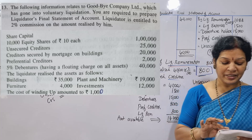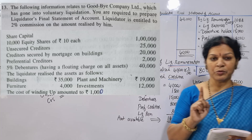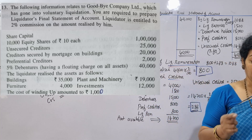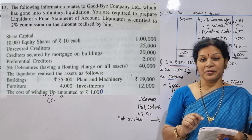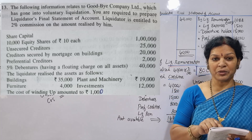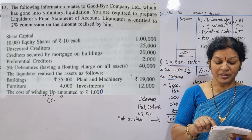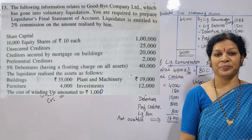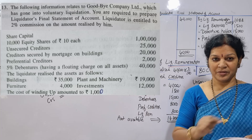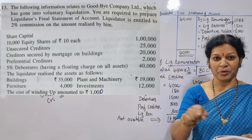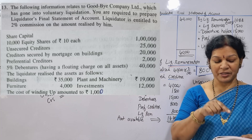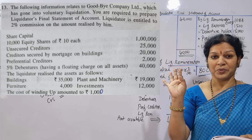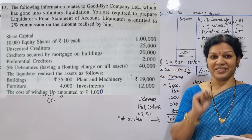Now, the building was secured by mortgage. We give $35,000 minus $20,000 to secured creditors — that leaves $15,000. Secured creditors are paid from the building proceeds.